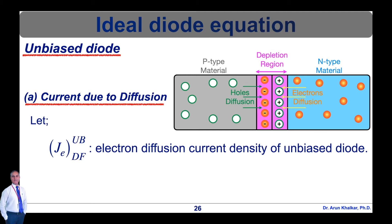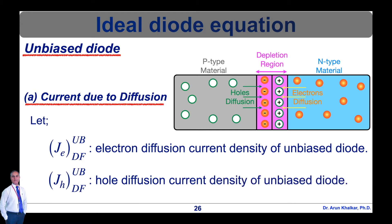In this notation, J is the current density, E stands for electrons, DF stands for diffusion, and UB stands for unbiased. In the second notation, capital J_H_DF_UB is the hole diffusion current density of the unbiased diode, where H is for hole, DF for diffusion, and UB for unbiased diode.